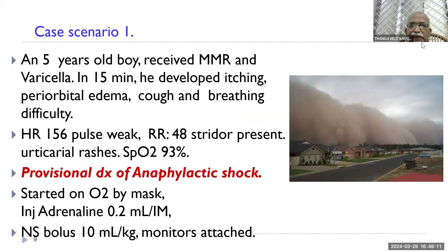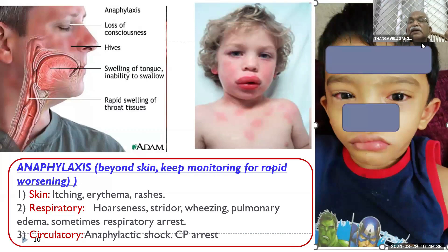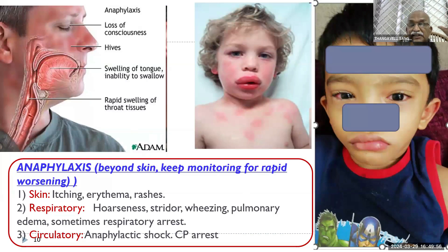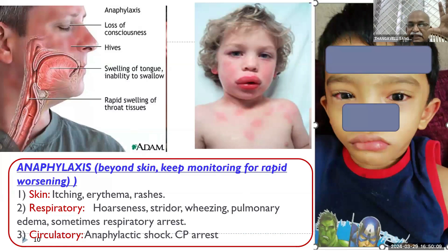Case one: a five-year-old boy received his MMR and varicella vaccines and was asked to wait in the hospital for 30 minutes. After 15 minutes, he developed itching, periorbital edema, cough, and breathing difficulty. He had tachycardia, audible stridor — sudden onset. Tachycardia, stridor, urticarial rashes, and falling saturation. Provisional diagnosis: anaphylactic shock. He received oxygen by mask, adrenaline 0.2 ml intramuscular, normal saline bolus was started, and monitoring was attached. The eyes were congested, with lip edema and periorbital edema. Does every child developing skin rashes following vaccines or a drug need adrenaline? No. When it exceeds one system and goes beyond the skin — child develops stridor, wheezing, pulmonary edema, weak pulse, tachycardia, hypotension — then adrenaline has a big role. All this can develop within two to three minutes, so once we see rashes in a particular situation, we must stay with the child and continuously monitor, because the child may rapidly deteriorate.